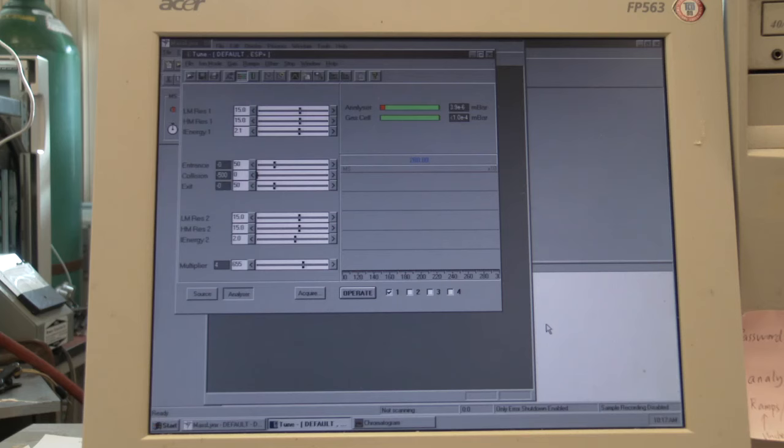The other very important region to know the pressure of is, of course, the detector region. This should be as low pressure as possible to help with sensitivity of the instrument. This instrument measures a pressure of 3.6 times 10 to the minus 6 millibars.